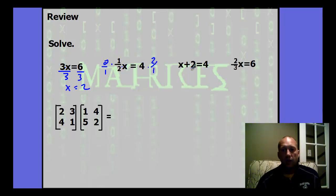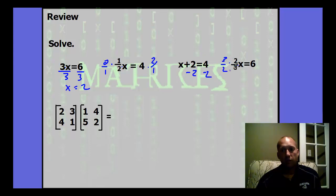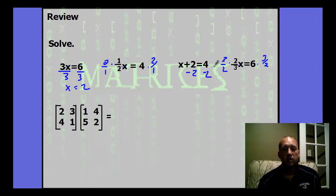Here we're adding 2, so we do the inverse — the additive inverse — subtract 2. Again, we'll multiply by two-thirds, so we do the multiplicative inverse: multiply by three-halves. So the whole point of this is showing how we're using inverses to solve all these. That's all we're going to do again — we're just going to do it with matrices.